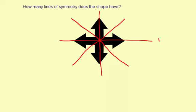So that's one, two, three, four—four lines of symmetry. The answer is four.